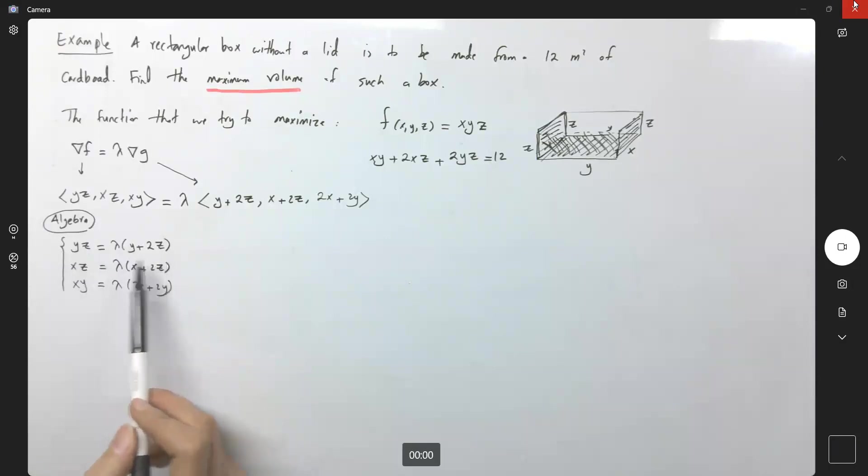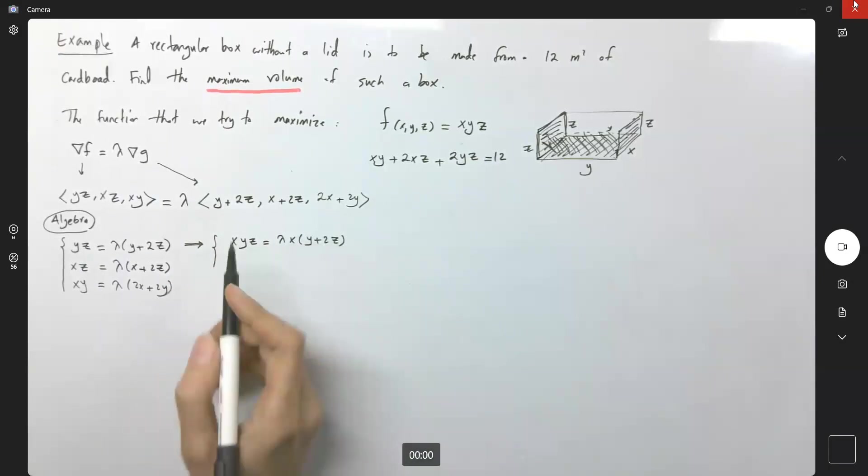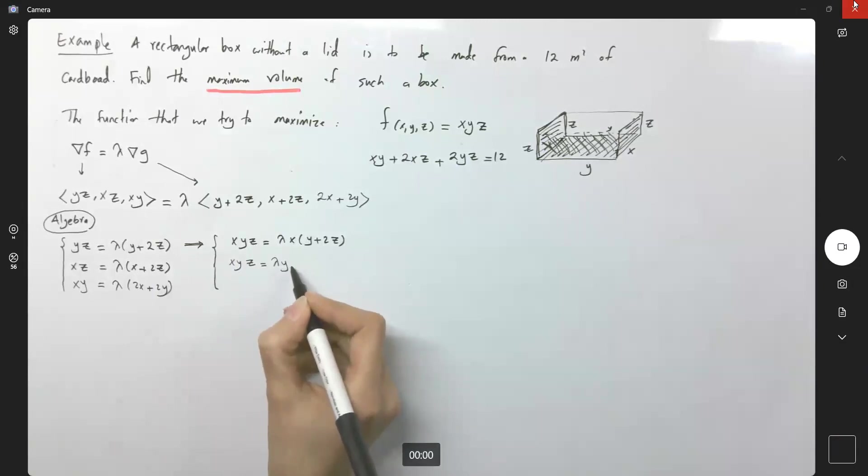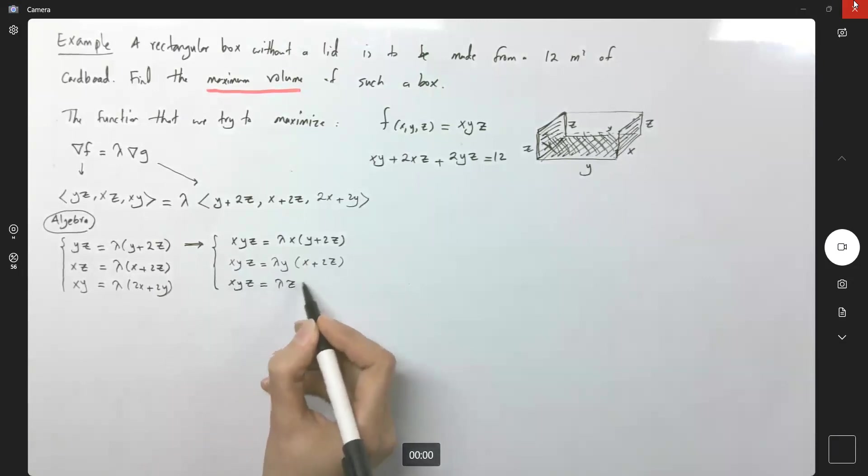So take a look at this. This guy is y, z equals to this; this guy is x, z equals to this; this guy is x, y equals to this term. The very first one if it's multiplied by x, and the second one multiplied by y, and the last one multiplied by z, are going to be similar, exactly the same on the left hand side. So multiply the first one by x: x, y, z is equal to lambda x, y plus two z. Multiply the second equation by y: x, y, z is equal to lambda y times x plus two z. Multiply the third equation by z: x, y, z equals to lambda z times two x plus two y. This is one of the methods that comes to mind in solving the system of equations.